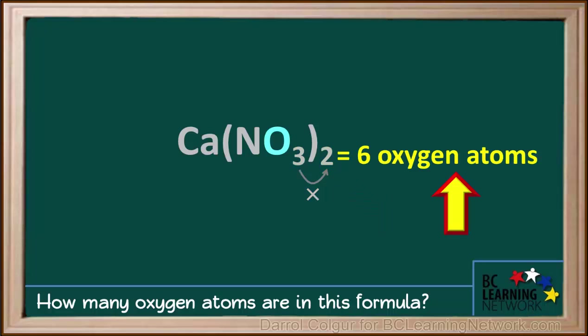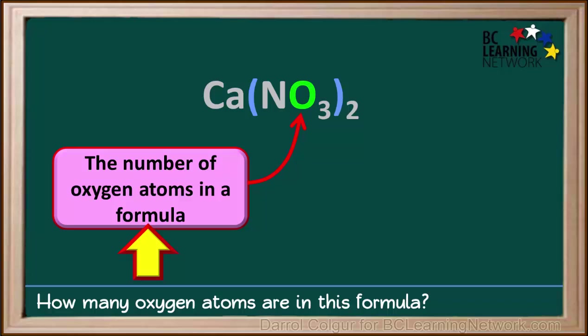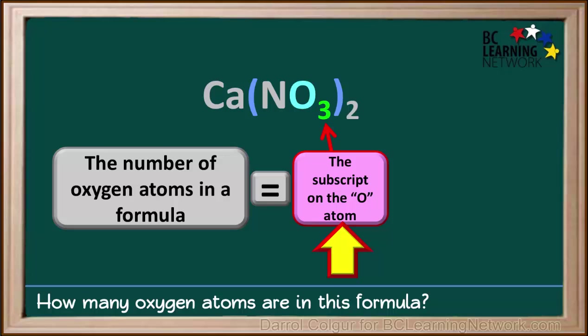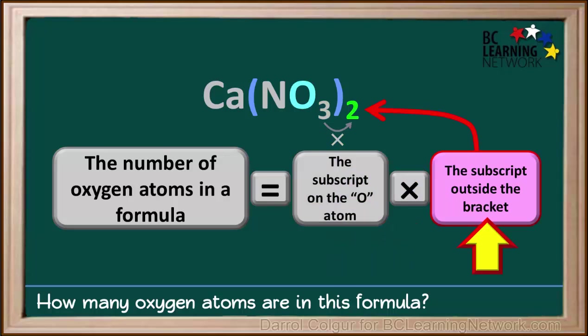So there are six oxygen atoms in the formula Ca(NO3)2. In general, we can say that the number of oxygen atoms in a formula where O is inside the brackets equals the subscript to the right of the oxygen atom times the subscript outside the bracket, just to the right of it.